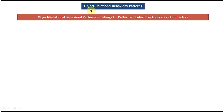Today we'll cover Object Relational Behavioral Patterns and what patterns come under this category. This Object Relational Behavioral Pattern belongs to Patterns of Enterprise Application Architecture.